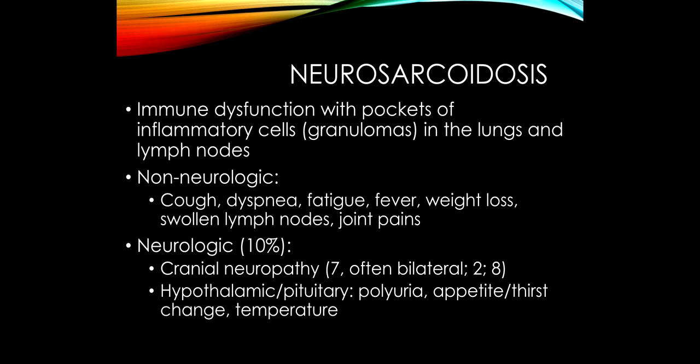Neurosarcoidosis is not a very common condition, but it is on the Step 1 and Step 2 content outline. There is immune dysfunction causing granulomas — pockets of inflammatory cells — that can occur throughout the body, most commonly in the lungs and lymph nodes. Sarcoidosis usually presents as a non-neurologic condition with lung involvement: cough, shortness of breath, fatigue, swollen lymph nodes, malaise, and achy joints.